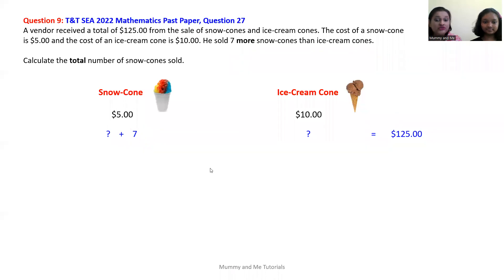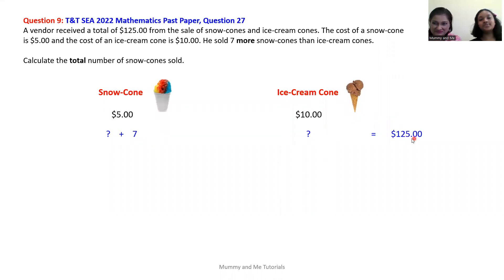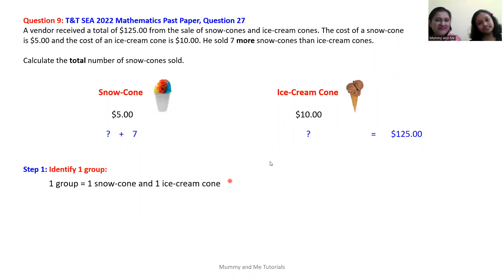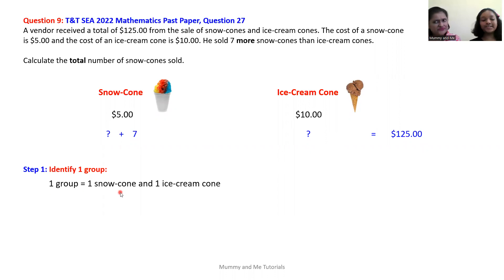And the total that the vendor earned from selling these amounts of snow cones and ice cream cones is $125. Step one is to identify one group. One group consists of one snow cone and one ice cream cone.